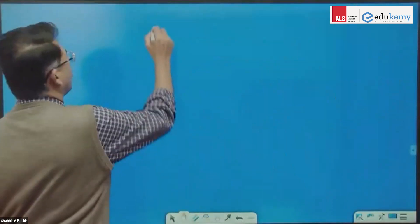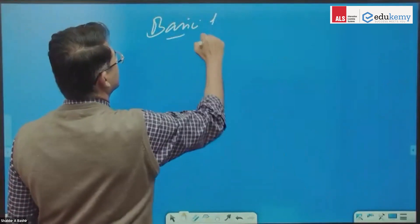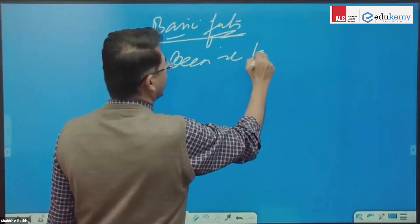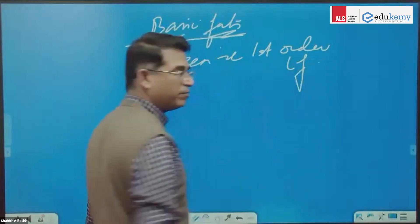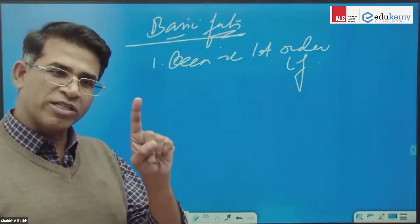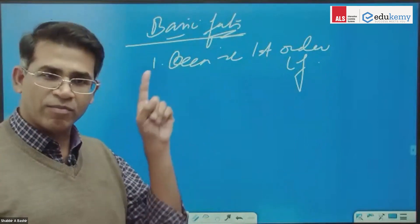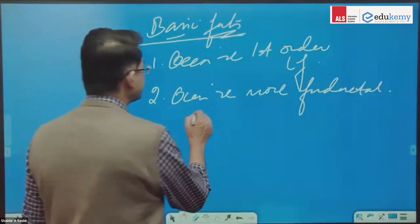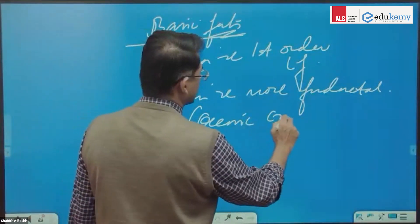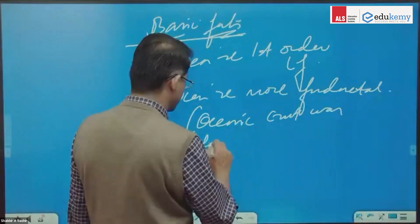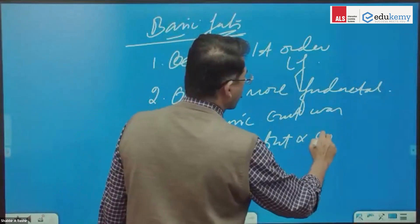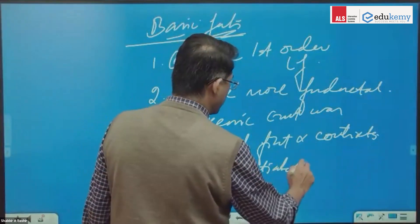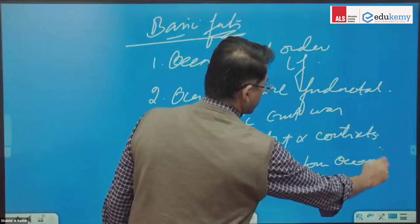Now, some basic facts we know: oceans are first-order landforms, just like continents — they are first-order landforms. Oceans are more fundamental, which basically means the oceanic crust was formed first.